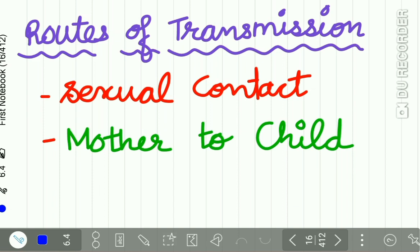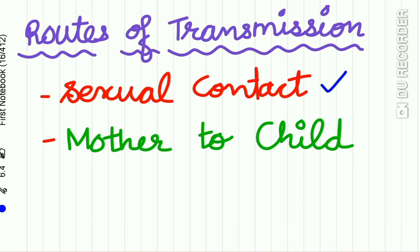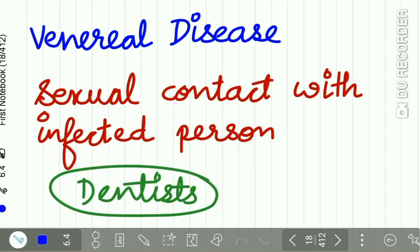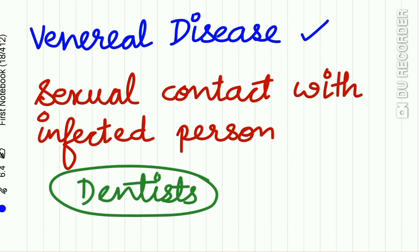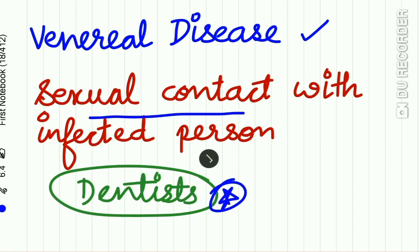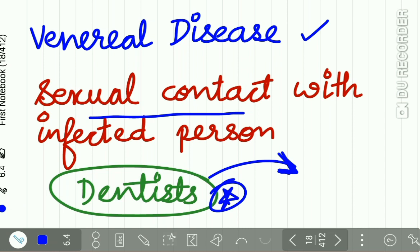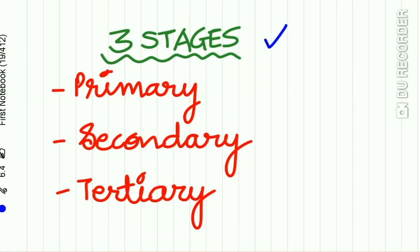The route of transmission of syphilis is mainly by sexual contact, or it can be spread from mother to child in the form of congenital syphilis. Acquired syphilis is a venereal disease caused by sexual contact with an infected person. The dentist may acquire it innocently, with lesions mainly seen on the fingers while working in the mouth of a patient suffering from syphilis. There are three stages: primary, secondary, and tertiary.